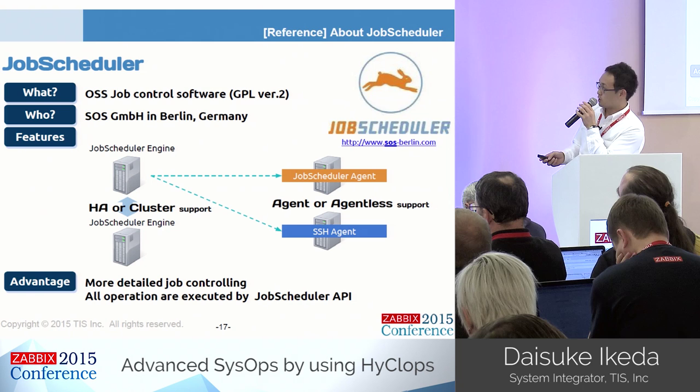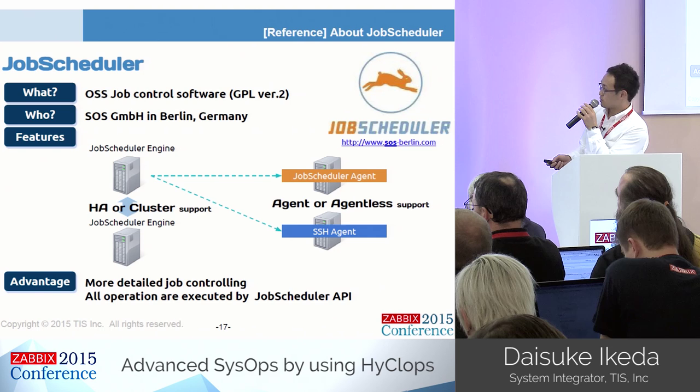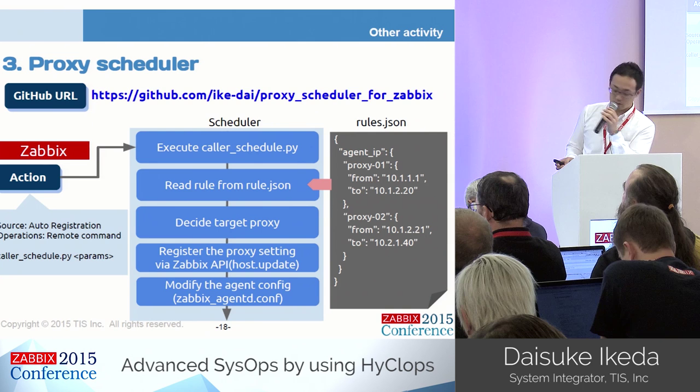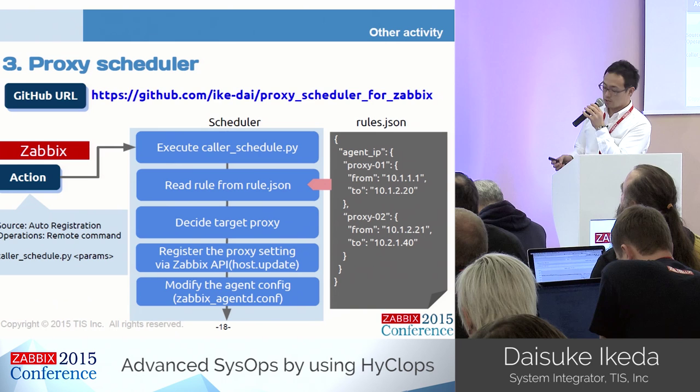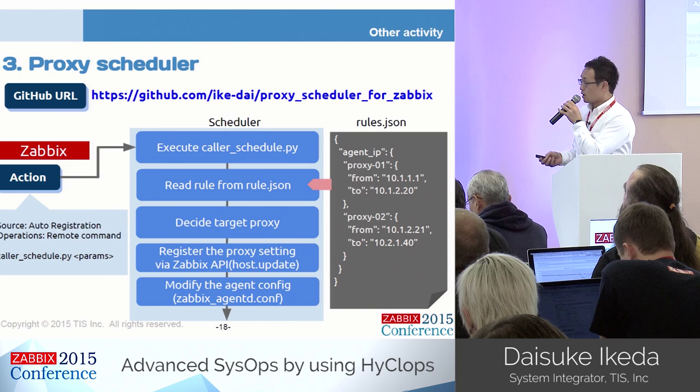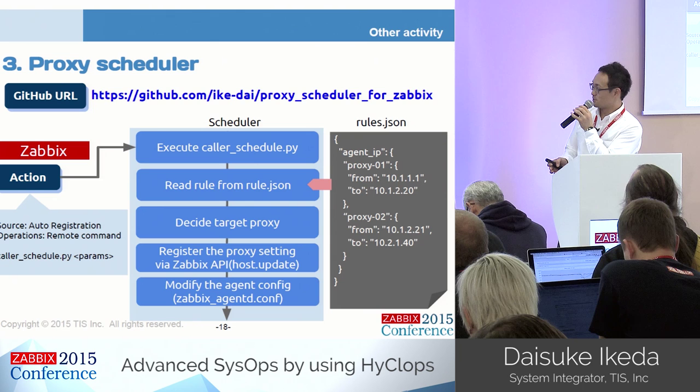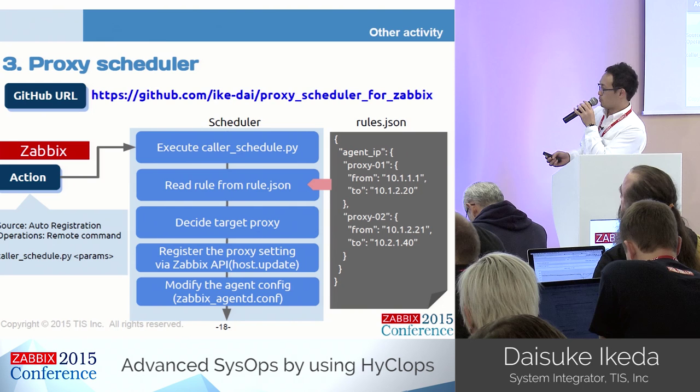If you want to know details about the job scheduler, please check the published document after the conference. The last one is the proxy scheduler. This tool judges which proxy should monitor the agent host and updates proxy settings automatically. I won't go into details today, but in a large distributed system, the concept of this tool will be more efficient.